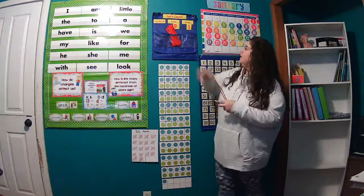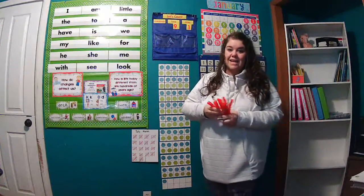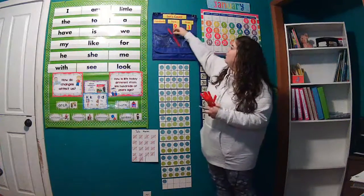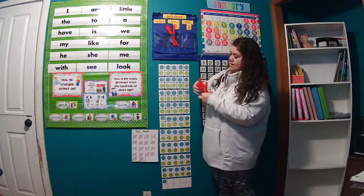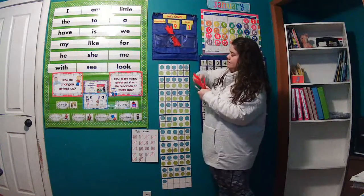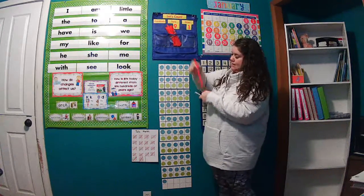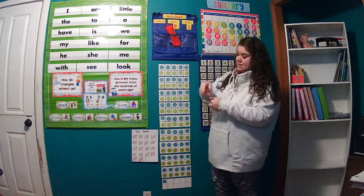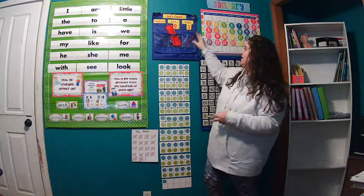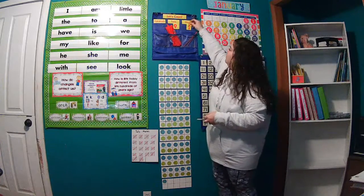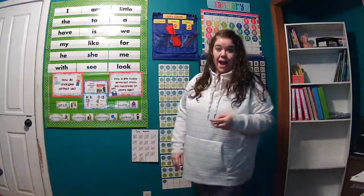Let's go ahead and add one more. We will count these straws by tens the say-ten way. So here we have one ten, two tens, three tens, four tens, five tens, six tens, seven tens, eight tens, nine tens. We have nine tens and two ones. Let's go ahead and change that to a two for ninety-two.